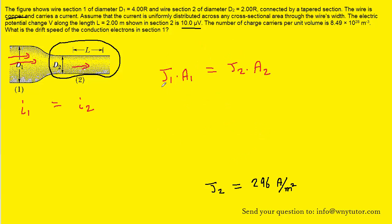We will solve this for the current density found in section 1, J1. So we will divide both sides of the equation by the area A1, canceling it on the left hand side.